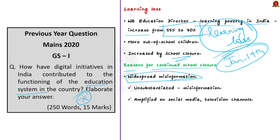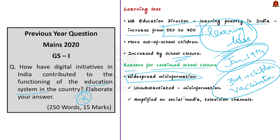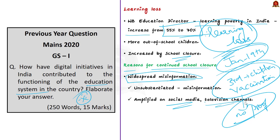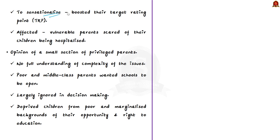Statements such as 'the third wave would affect children' and 'let's wait for vaccination of kids before reopening schools' are examples of misinformation — they are not substantiated. These statements got amplified on social media, and many television channels made them on loop to sensationalize, boosting their TRP. The vulnerable parents who believed this misinformation were scared of their children being hospitalized, ultimately harming the children.